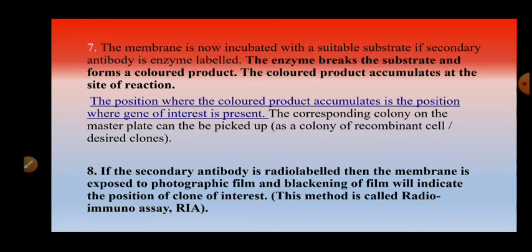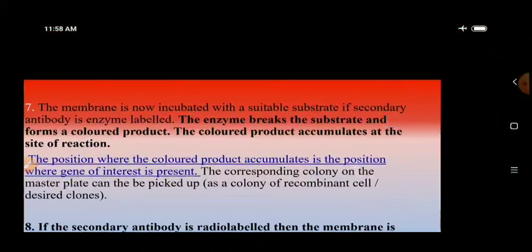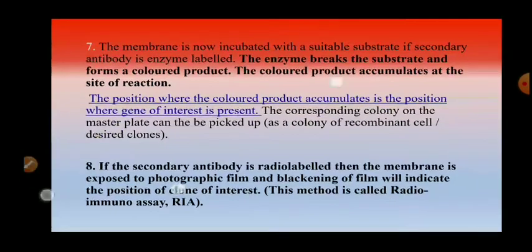If the secondary antibody is radio-labelled, the membrane is exposed to photographic film to produce an X-ray image. Blackening of the film — formation of a black spot — indicates the position of the clone of interest. This method is called radioimmunoassay.